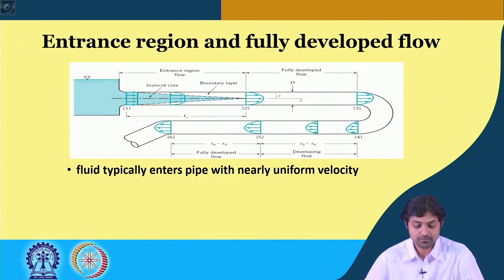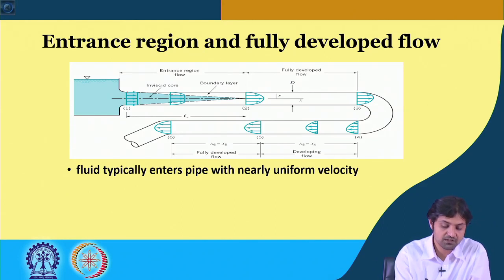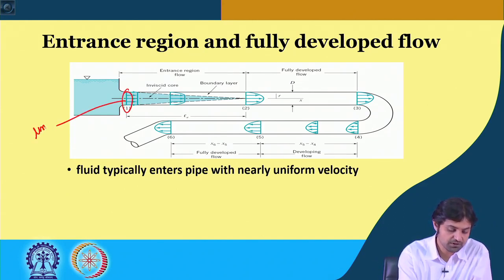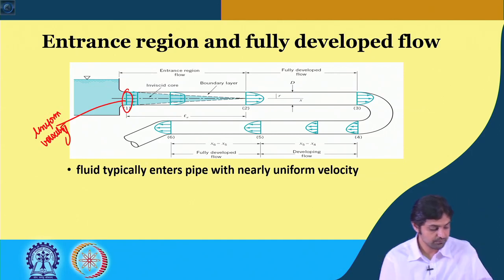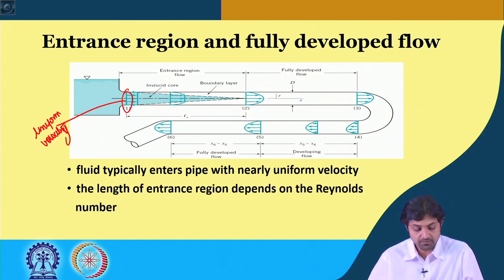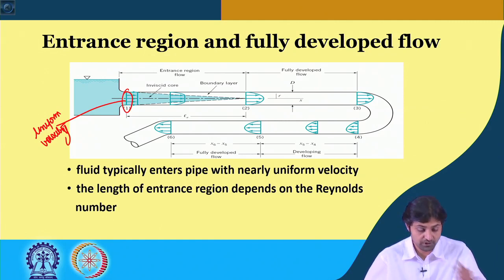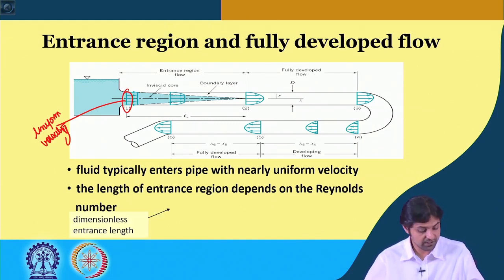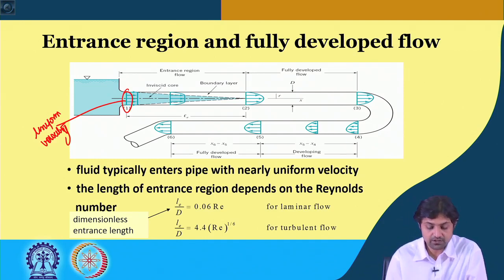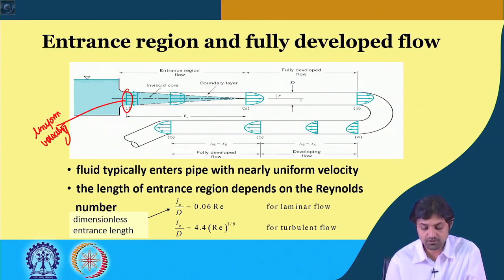Fluid typically enters the pipe with nearly uniform velocity at section 1. The length of the entrance region depends on the Reynolds number — how long this entrance length is depends on how fast the water is flowing, or in other words, the Reynolds number. The dimensionless entrance length is given by: l_e / d = 0.06 × Re for laminar flow, whereas for turbulent flow it is l_e / d = 4.4 × Re^(1/6). These are important formulas to remember.